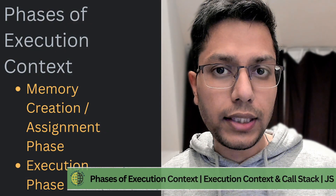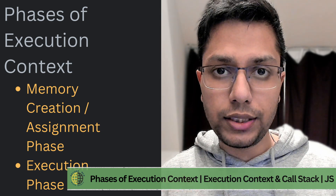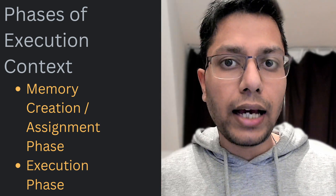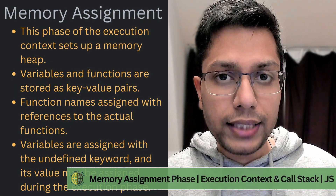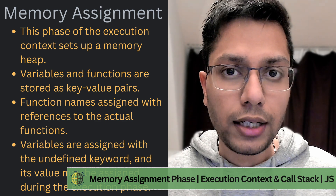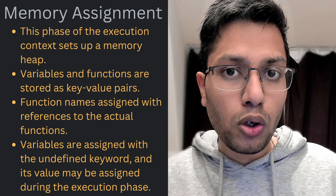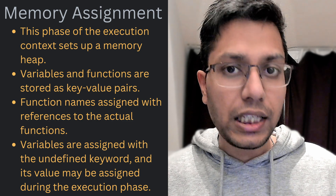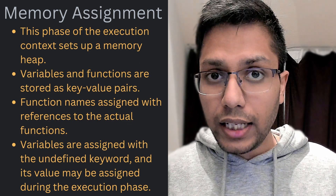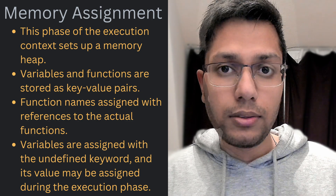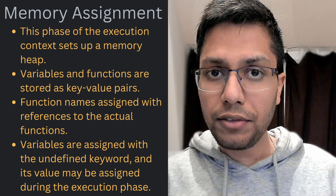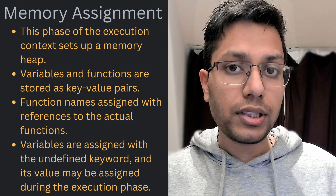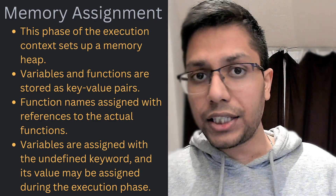Whenever a new execution context is created, it goes through two phases. The first is the memory creation or assignment phase, and the second is the execution phase. In the memory assignment phase, a memory heap is set up to store all the variables and function references as key-value pairs, with function names set to reference the actual functions and each variable assigned the undefined keyword, denoting that memory is assigned and may be replaced with actual values during the execution phase.